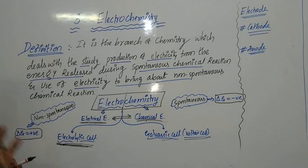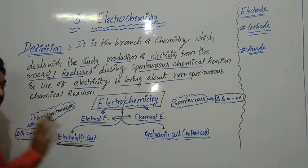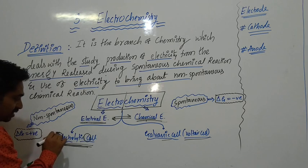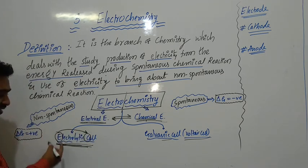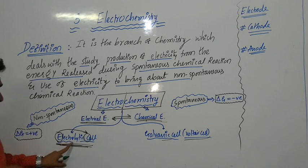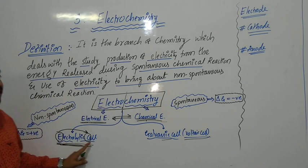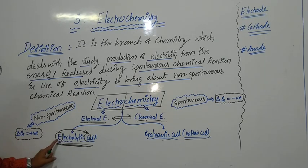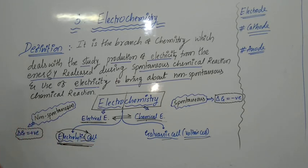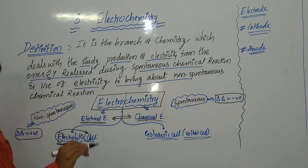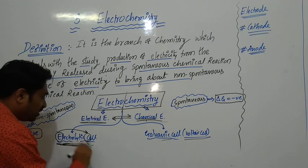In the electrolytic cell, electrical energy is converted into chemical energy. To remember this: E stands for electrical energy and C stands for chemical energy — electrical energy to chemical energy. It is a device in which a non-spontaneous chemical reaction takes place by the use of electric current. The non-spontaneous chemical reaction takes place by using electrical energy, so this device is called an electrolytic cell — a device in which electrical energy is converted into chemical energy.